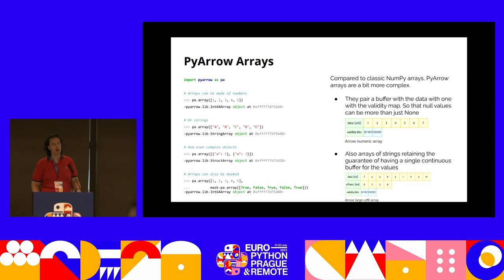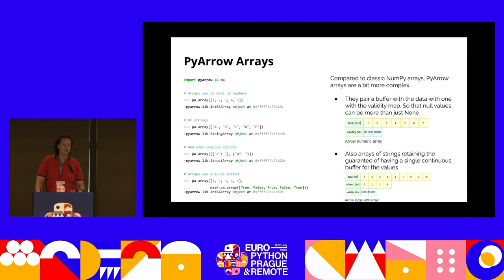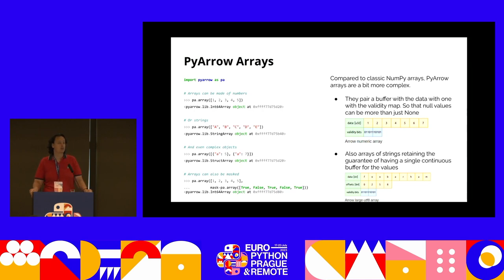NumPy was born without thinking too much about shareability of data. The format is not very optimized for transmission over networks or for fast memory access. For example, NumPy does not perform well with strings, structured objects, or missing data. In those cases, NumPy relies on Python — so if you store a string, it will be a Python object, meaning instead of a continuous array of memory, we'll have just pointers to Python objects, and we cannot implement any performant vectorized algorithm on them.